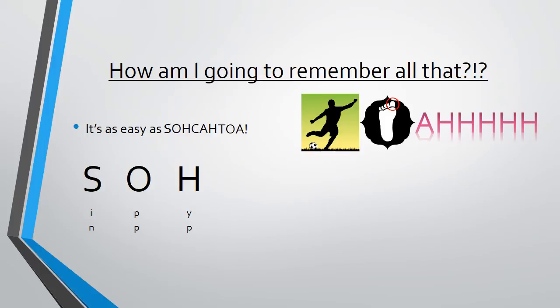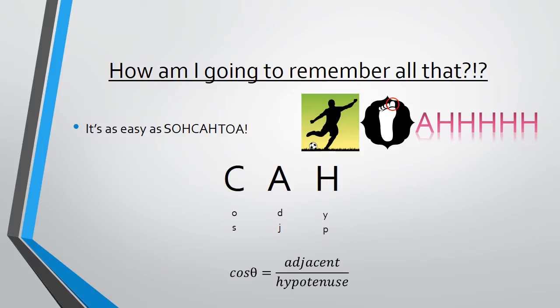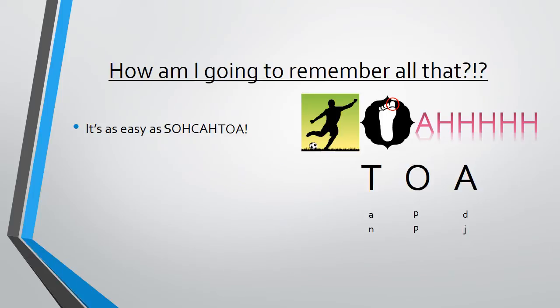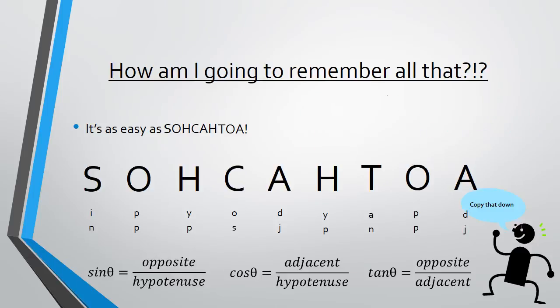So if we take a closer look at each of the individual ratios. Sine, opposite over hypotenuse. Cos, adjacent over hypotenuse. And tan, opposite over adjacent. Take a moment to copy that down.